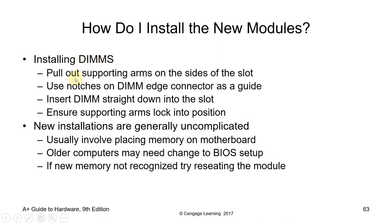Installing DIMMs: pull out the supporting arms on both sides of the slot. Use notches on the DIMM edge connector as a guide. Insert the DIMM straight down into the slot and ensure the supporting arms lock into position. New installations are generally uncomplicated. Your computer may need a BIOS setup change. If new memory is not recognized, try reseating — remove it and place it back in.